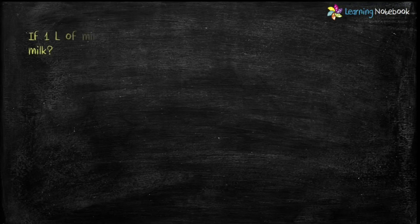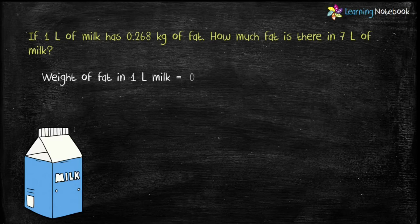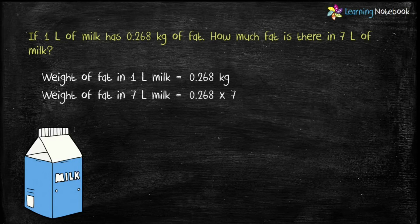Next question: If 1 litre of milk has 0.268 kg of fat, how much fat is there in 7 litres of milk? Let's solve it. Weight of fat in 1 litre of milk equals 0.268 kg. So weight of fat in 7 litres of milk equals 0.268 multiplied by 7.